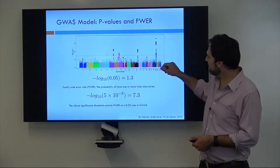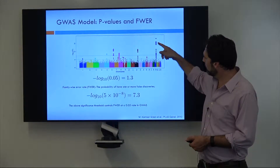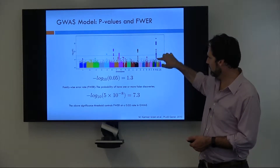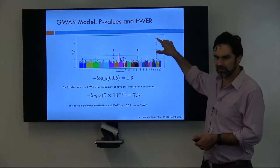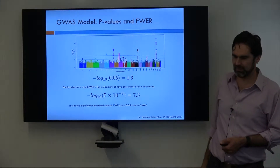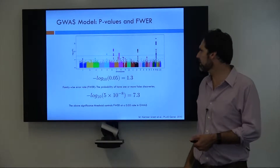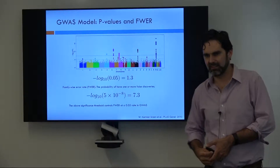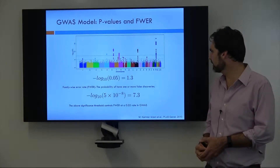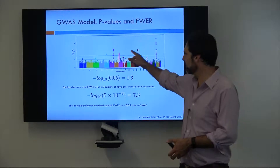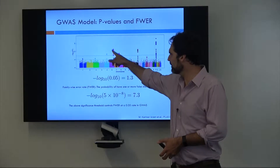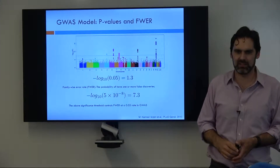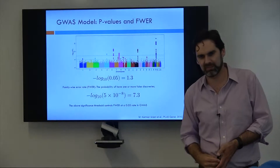Now, why is it that in this block here, there's a ton of variation that's all statistically significant? Why isn't it just one dot at that location? And why is it the same for all of these — why is there always a bunch of dots and not just one dot that shows up as significant?